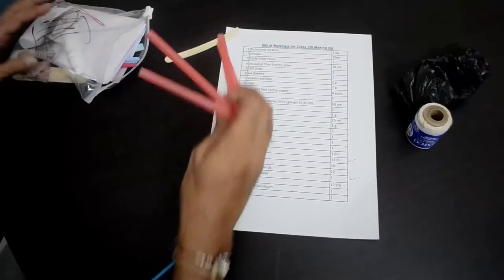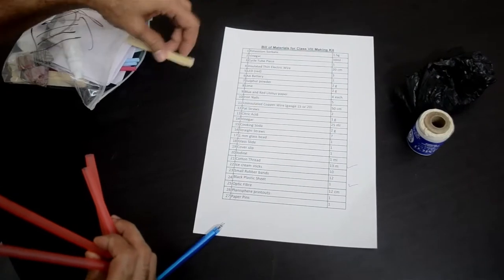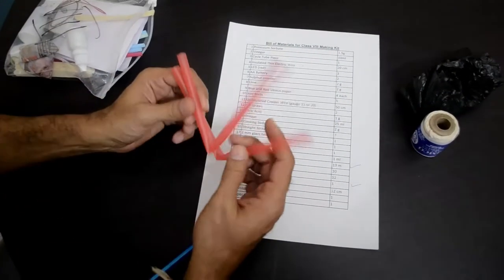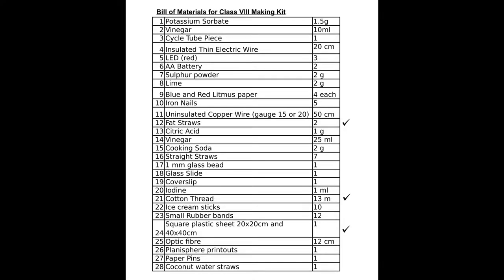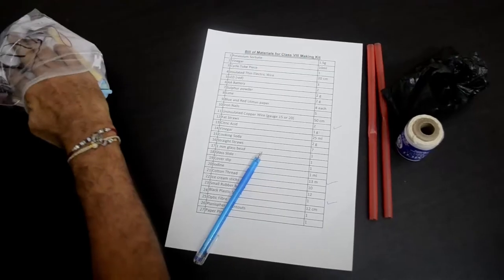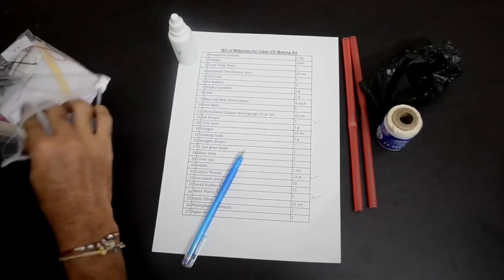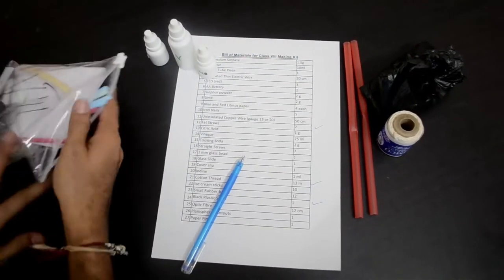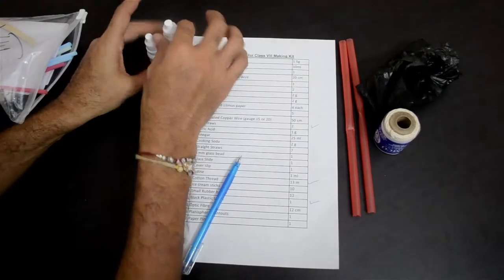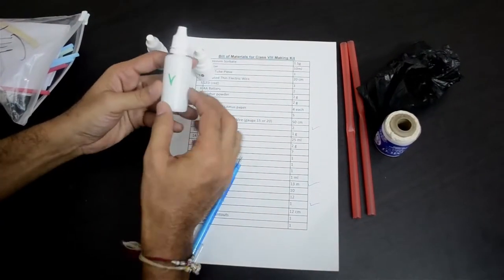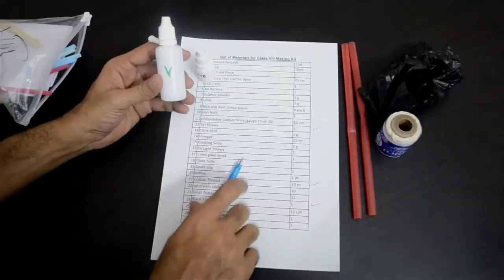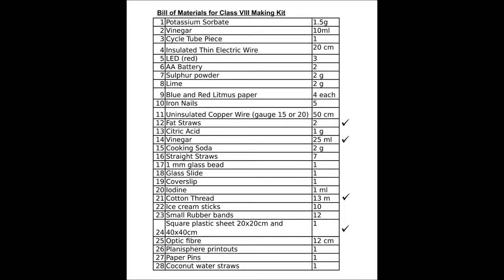Then you will find these fat straws. That is item number 12 in our list. Then there are a few chemicals. You will find three bottles in total. One which is a bigger bottle, a 30 ml bottle, which would have been labelled as V, which is 30 ml of vinegar. Item number 14 in our list.